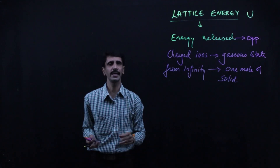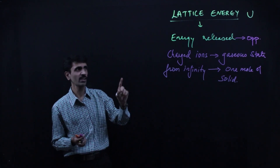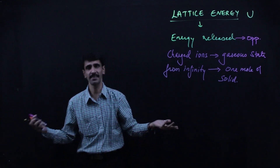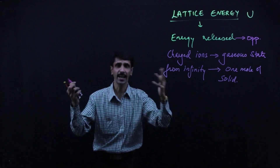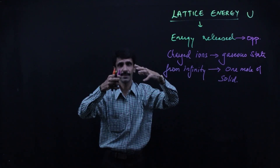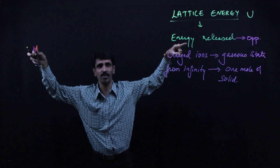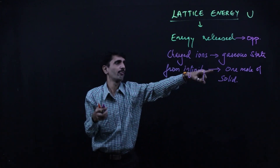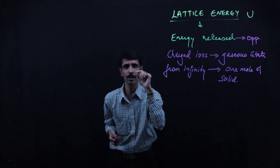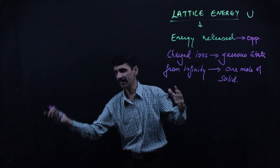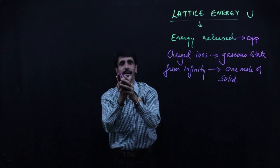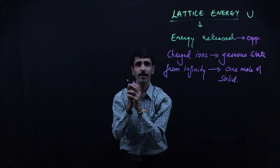So what is Lattice Energy? It is the energy released when oppositely charged ions in the gaseous state come from far off distance — that is, from infinity — and come closer, for the formation of one mole of a solid. So when I have a positive ion and a negative ion coming from far off distance closer together, the purpose is bond formation.